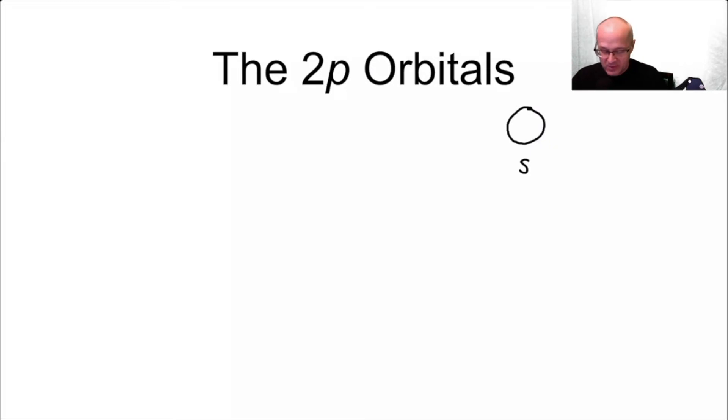S orbitals are circles. P orbitals, however, are dumbbell shape. And remember, there are three of them: PX, PY, and let's not forget PZ. PZ is going towards us and away from us. Now these are the two most common orbitals we encounter in organic chemistry because carbon has these two orbitals. But there are others.